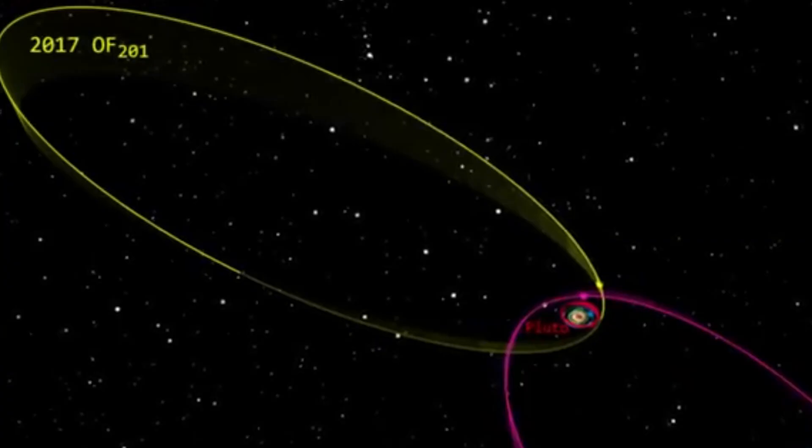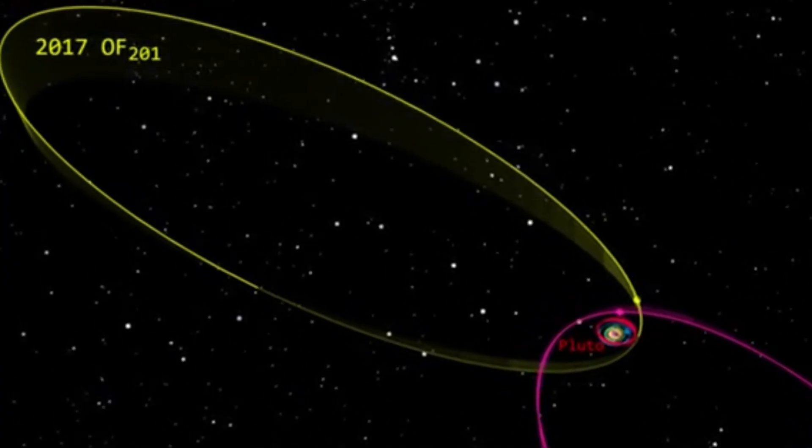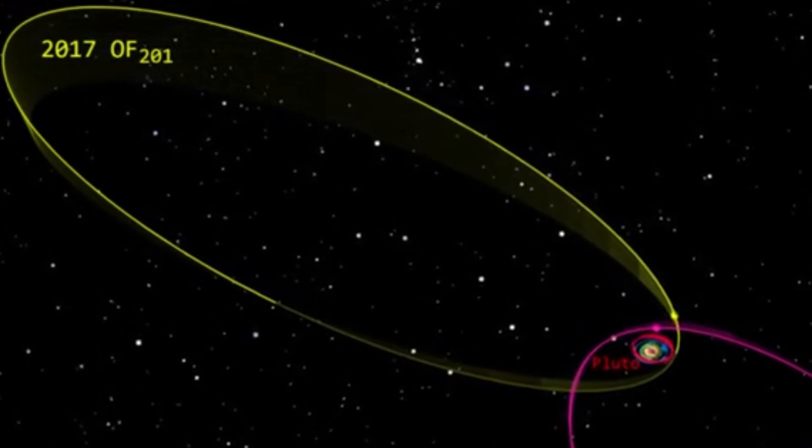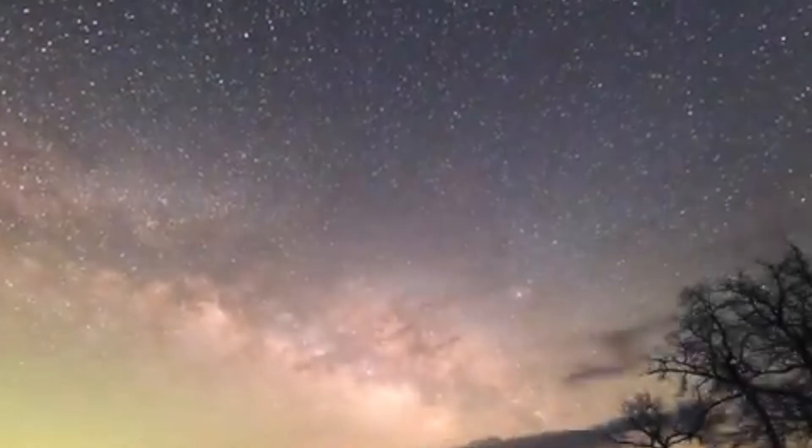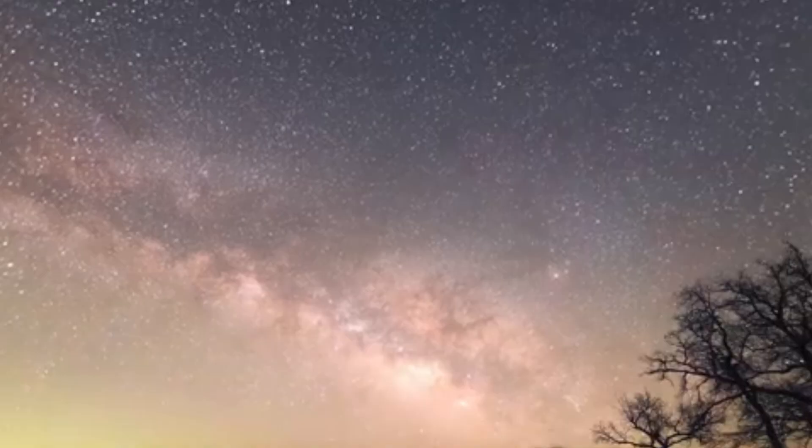The bottom line is that we only know a fraction of these so-called trans-Neptunian objects. And yet, astronomers have already noticed a striking pattern. According to this pattern, previous investigations have shown that some of the celestial bodies there prefer to congregate in a very specific area of the Kuiper Belt.